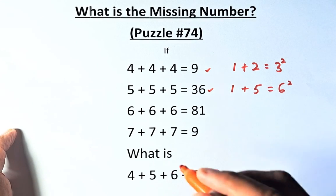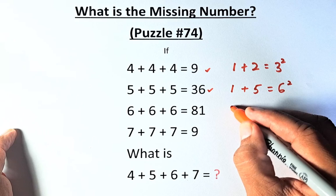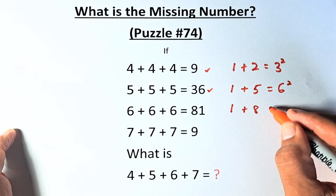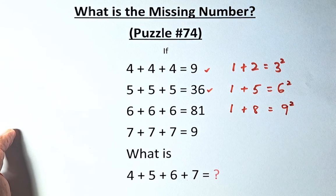In the third row, 6 plus 6 plus 6 is 18. So we're going to put 1 and 8, and then we're going to add them up. 1 plus 8 is going to be 9, and again, we're going to square the answer, and the answer is 81.